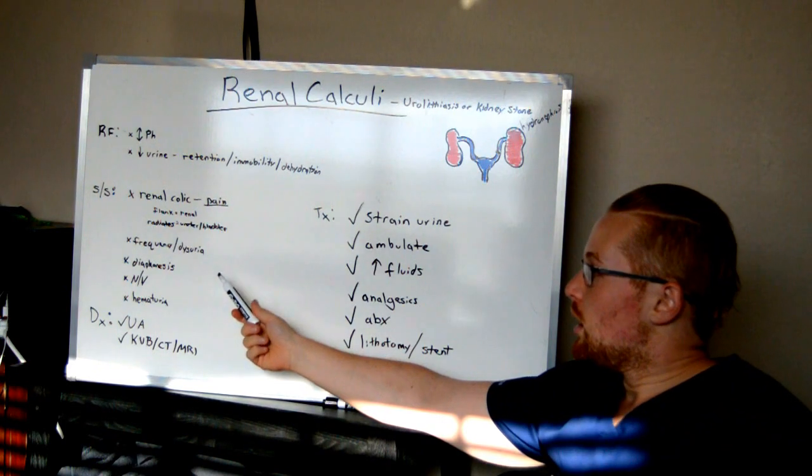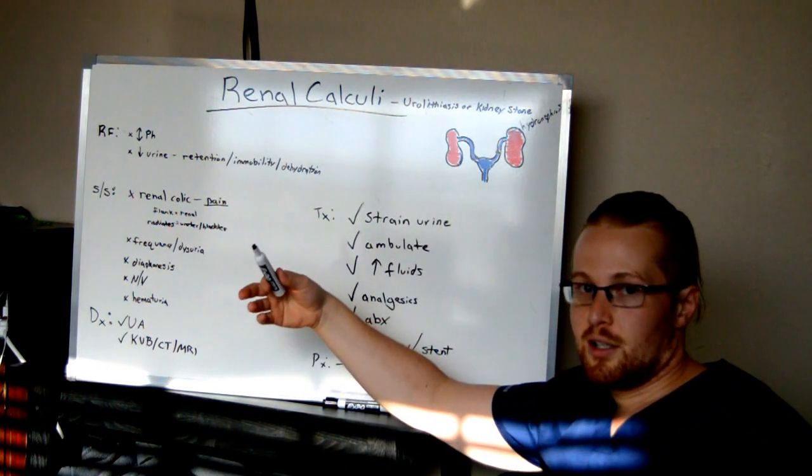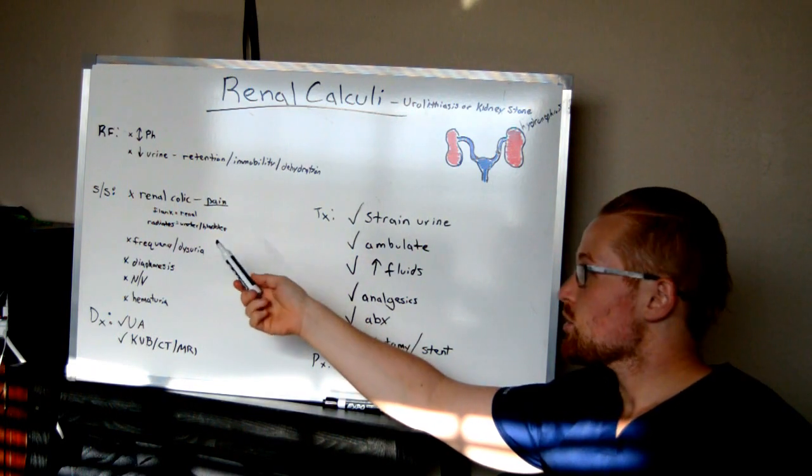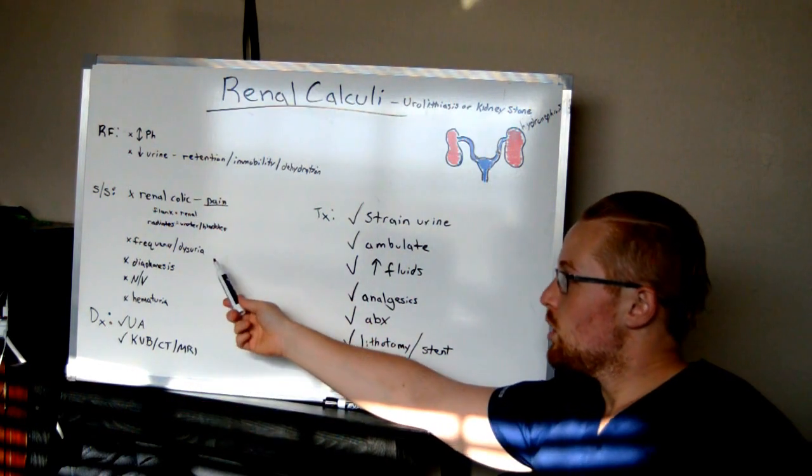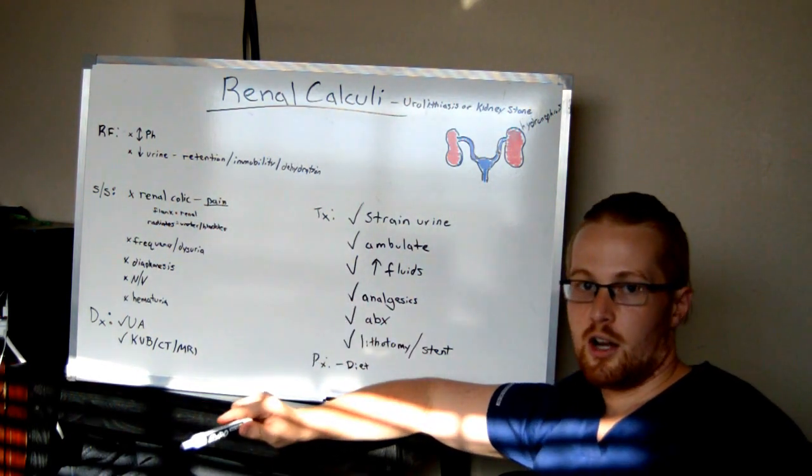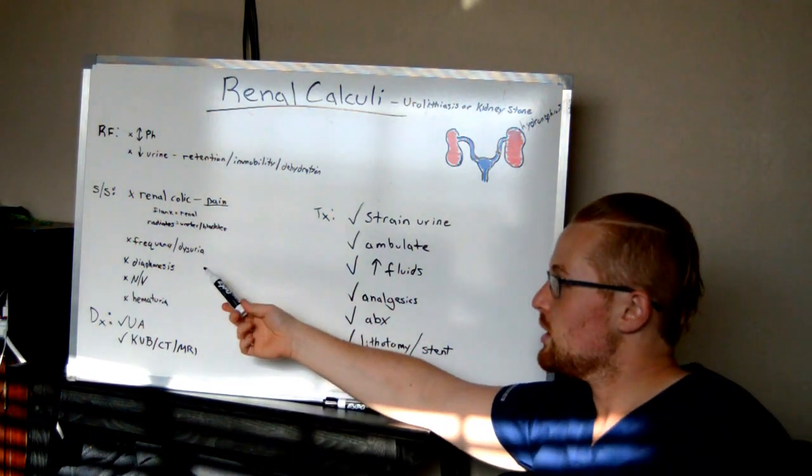Other signs. Often, these stones help hold on to bacteria, because they're sitting in there and they're not getting washed out. So you may have signs like frequency, where you're urinating more often than normal. You may have dysuria, trouble getting urine out. You may only be getting out little bits of it, because it's just what's working its way around the kidney stone.